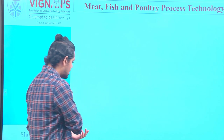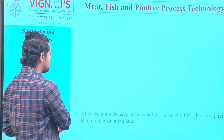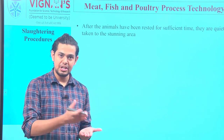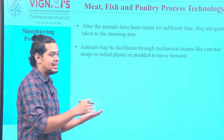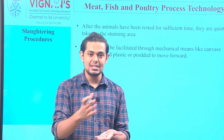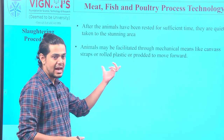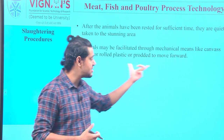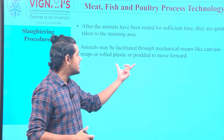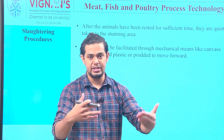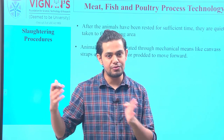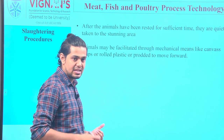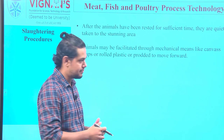After ante-mortem inspection, and after the animal has been provided with a sufficient resting period, the animal will be carried to a place called the stunning area. The animal will be facilitated by means of mechanical canvas, rolled plastic, or prodded to move forward — moved from the resting place called the lairage to the stunning area.